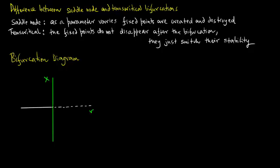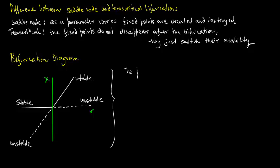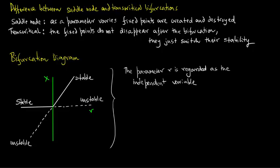Now let's plot the bifurcation diagram for the transcritical bifurcation. We plot x versus R, highlighting the stable branches as solid lines and the unstable branches as dotted lines. The parameter r is regarded as the independent variable.